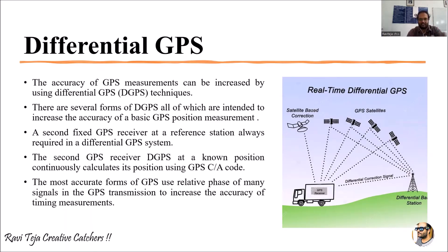DGPS has different types of techniques, and all of these techniques are intended to increase the accuracy of GPS position measurement. This differential GPS is always fixed at a particular location, monitoring signals with respect to the satellite as well as several GPS receivers. It is a secondary GPS receiver fixed at a reference station that helps improve a particular GPS receiver's performance.